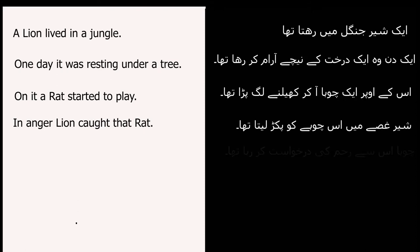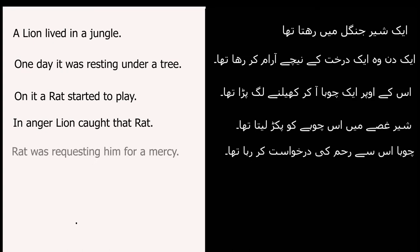The next sentence is: 'چوہا اس سے رحم کی درخواست کر رہا تھا' — 'کر رہا تھا' means this goes into past continuous. The rule for past continuous is to use 'was/were' with the first form of the verb plus 'ing'. So: 'The rat was requesting him for mercy.'